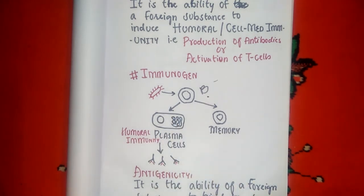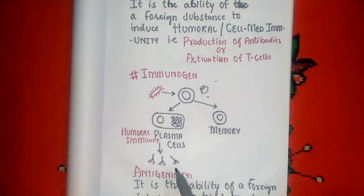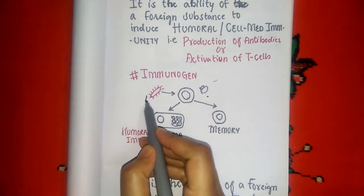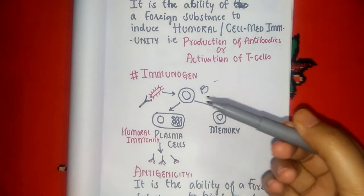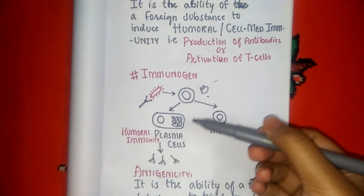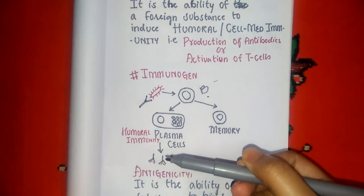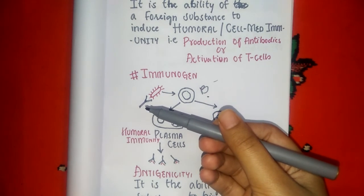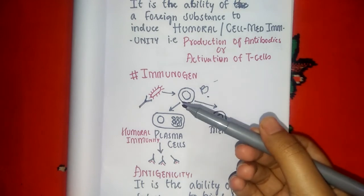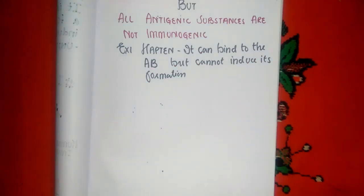Let's understand the first point — all immunogens are also antigenic. The bacteria entering the body induces stimulation of B cells, which differentiate into plasma cells that produce antibodies. These antibodies then act on the bacteria. So in the first step the bacteria is an immunogen, and since the produced antibodies also bind back to that bacteria, it has both immunogenic and antigenic properties.